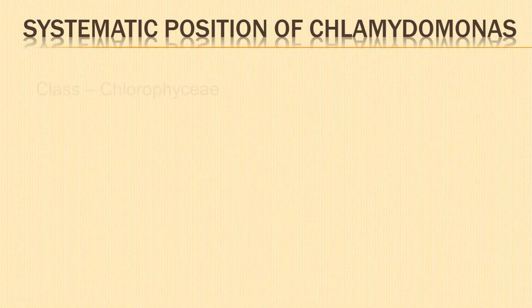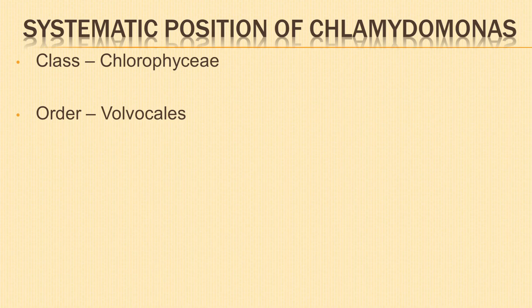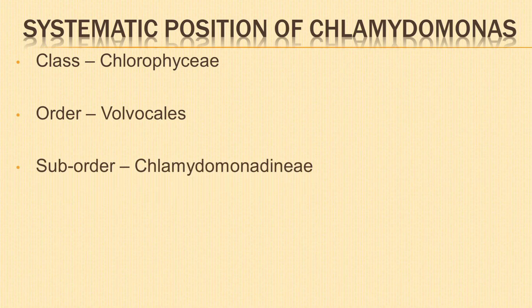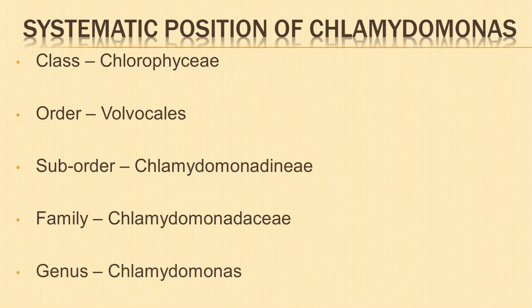The systematic position of Chlamydomonas is as follows: Class Chlorophyceae, Order Volvocales, Suborder Chlamydomonadineae, Family Chlamydomonadaceae, and Genus Chlamydomonas.